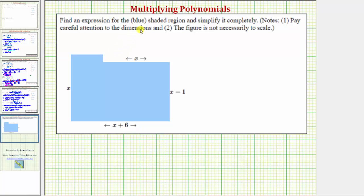We're asked to find an expression for the area of the blue shaded region and simplify it completely. We'll be using the strategy of decomposing the area. Notice how if we take this total area and divide it into two smaller areas, the smaller areas are rectangles, and we know the area of a rectangle is equal to length times width.